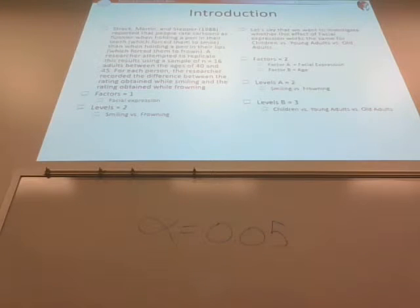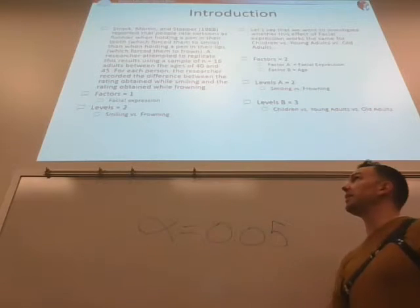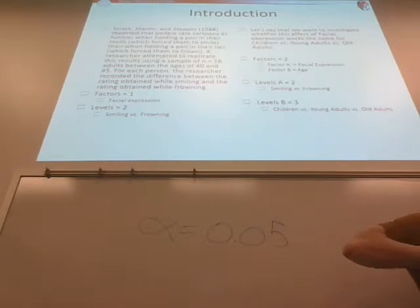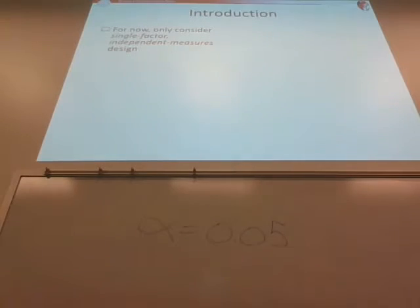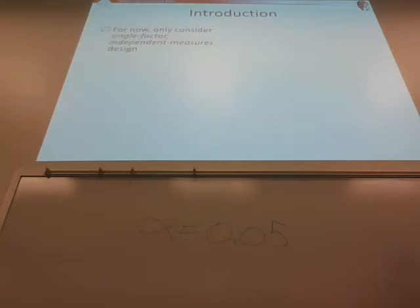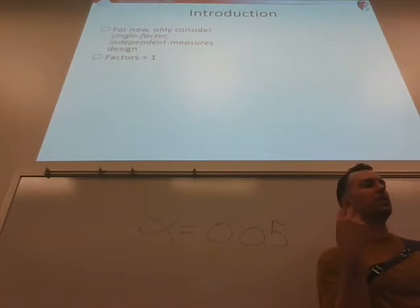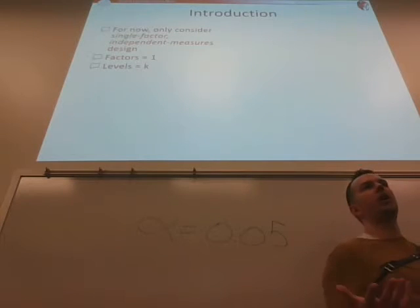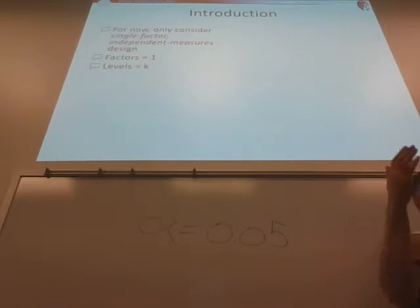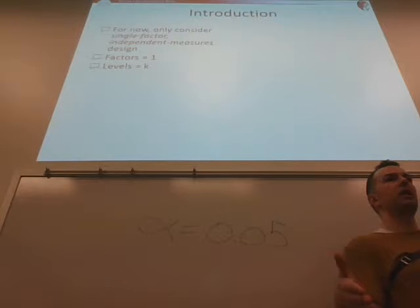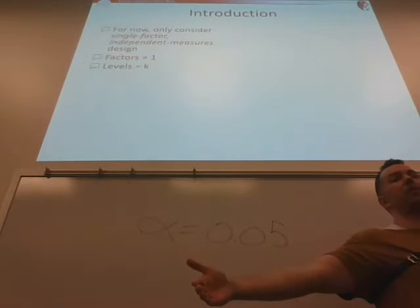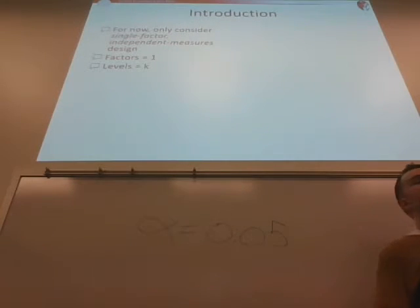As you can imagine, there are many different types of ANOVAs because there are many different types of these situations. But this is introduction to ANOVA, so we're going to consider the most straightforward one: the single factor, independent measures design. You've got one factor but you can have as many levels as you want — three levels, seven levels, 42 levels if that's what you need — just more than two.